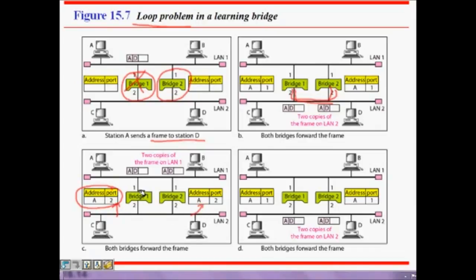Similarly, the frame from bridge 2 goes back to bridge 1, which now also updates A as coming from port 2. The frame then gets forwarded back to LAN 1, and this keeps cycling — the table entries keep updating and the frame loops endlessly. This is the loop problem.